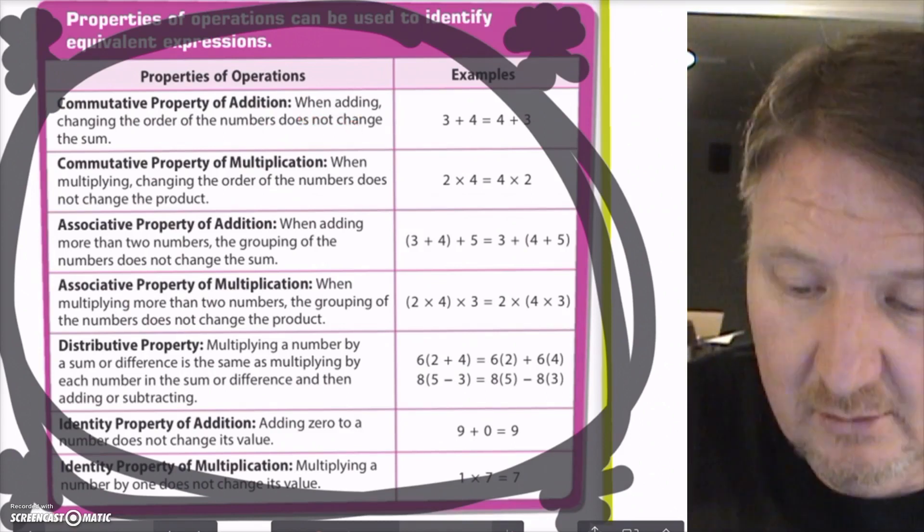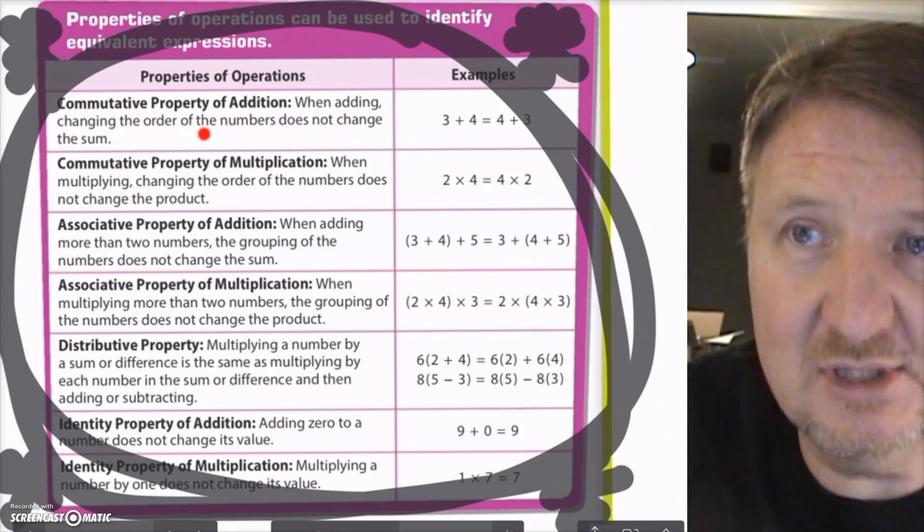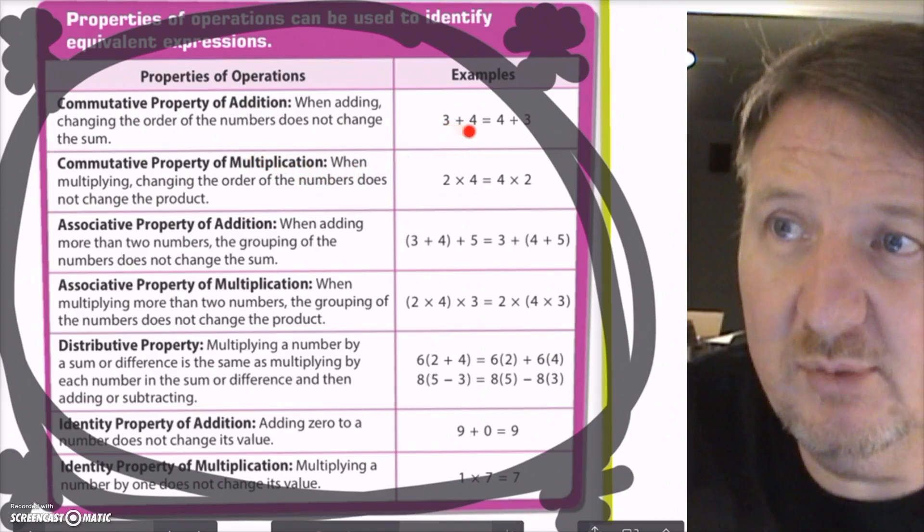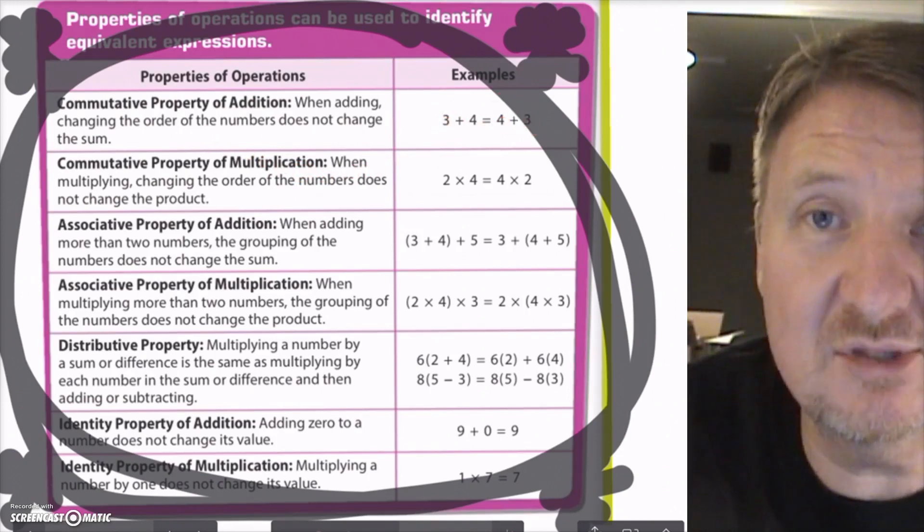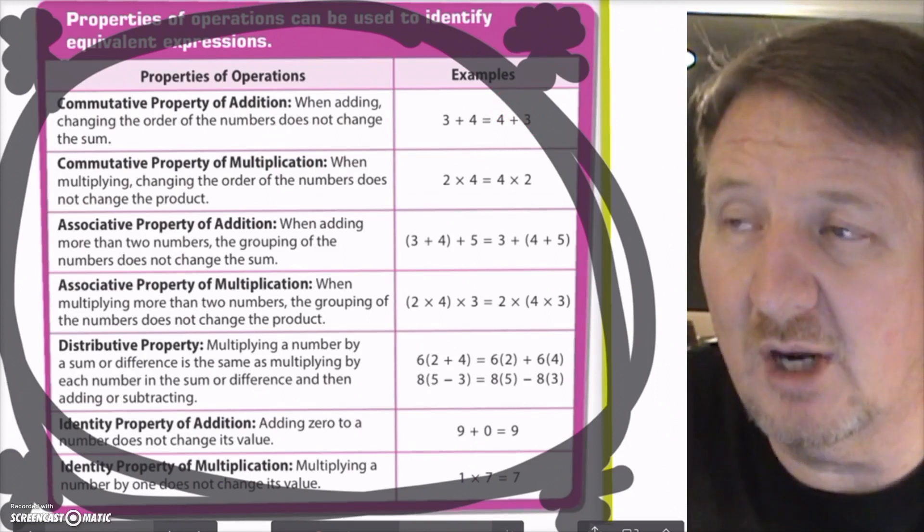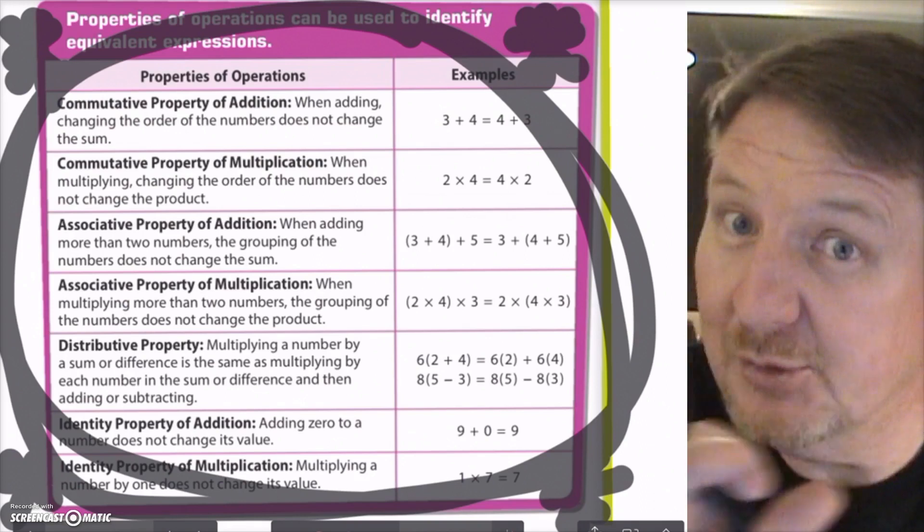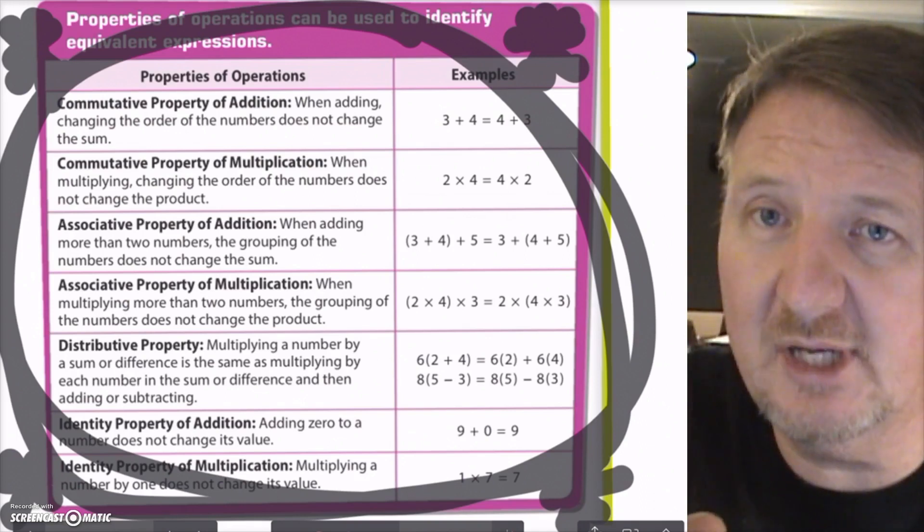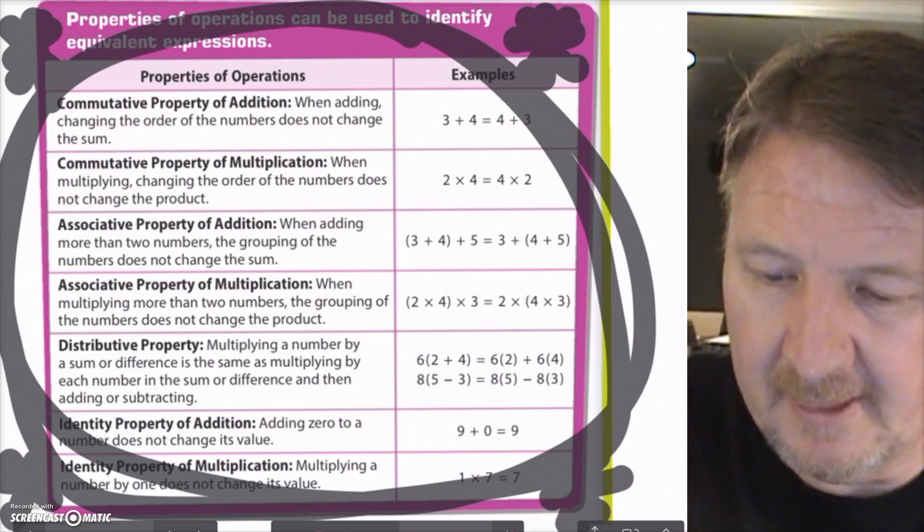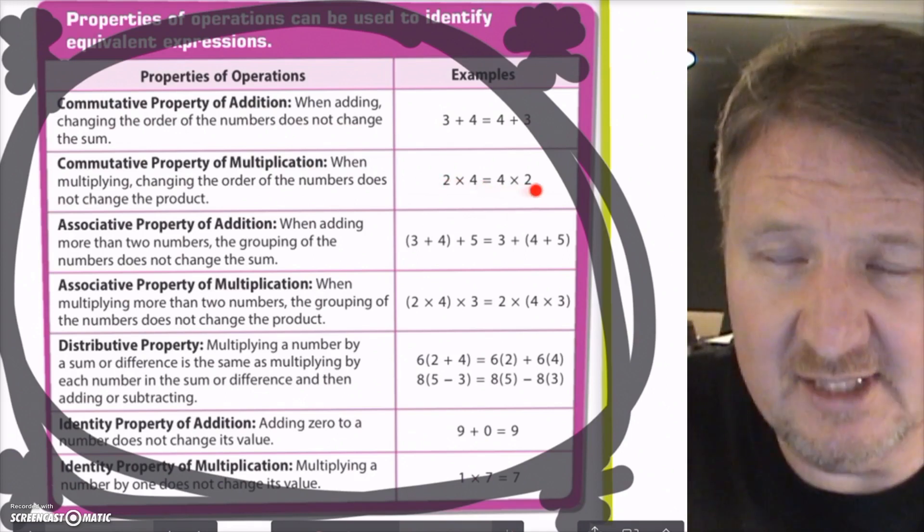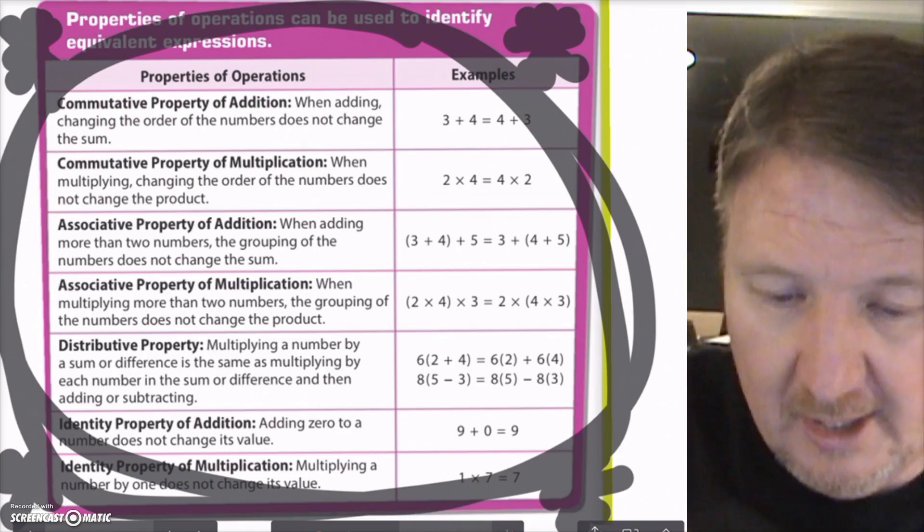So the commutative property of addition, there's a commutative property of multiplication. They're basically the same, except one affects multiplication and the other affects addition. So commutative is the key word. Commutative means to commute, to move, to go back and forth. So it says when adding or when multiplying, changing the order of the numbers does not change the sum. So we got 3 plus 4, I'm going to get 7. If I add 4 plus 3, guess what? I'm still going to get 7. So in an addition problem, you can change the order and you won't affect the answer.